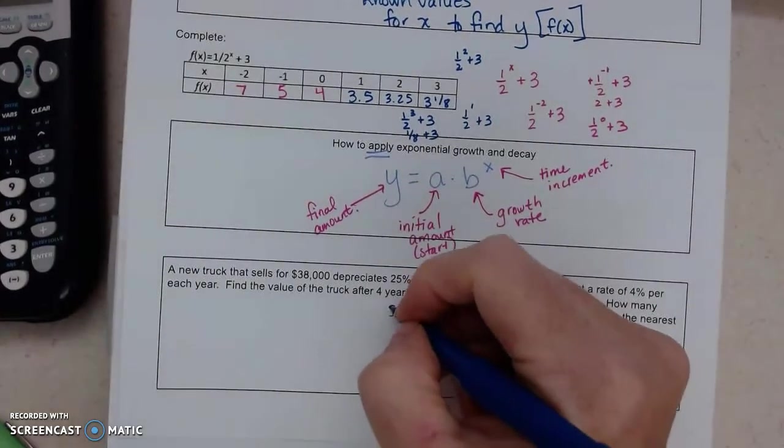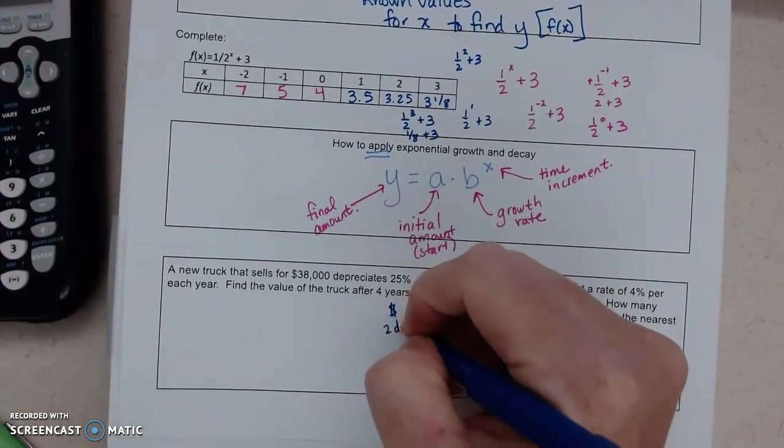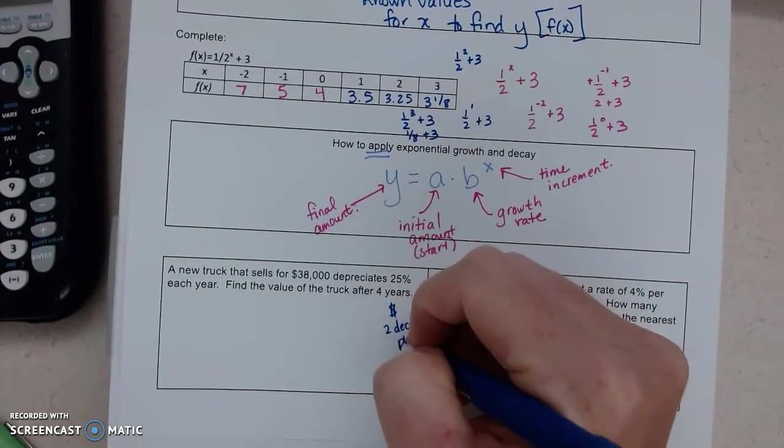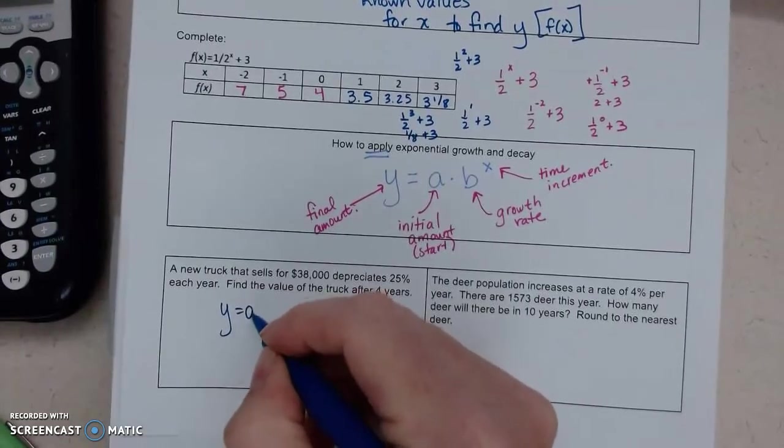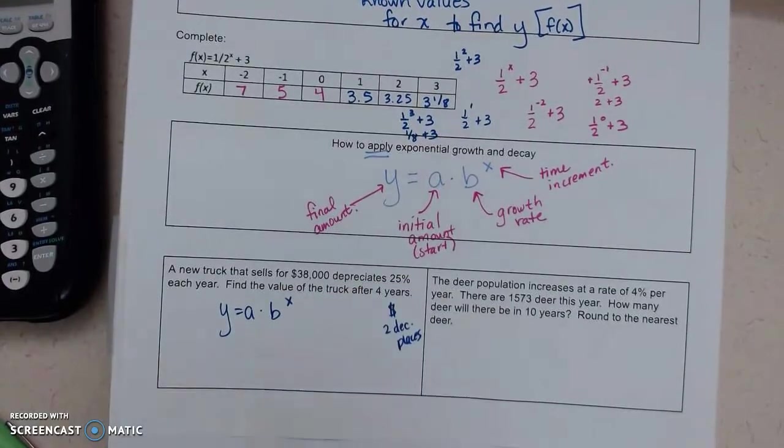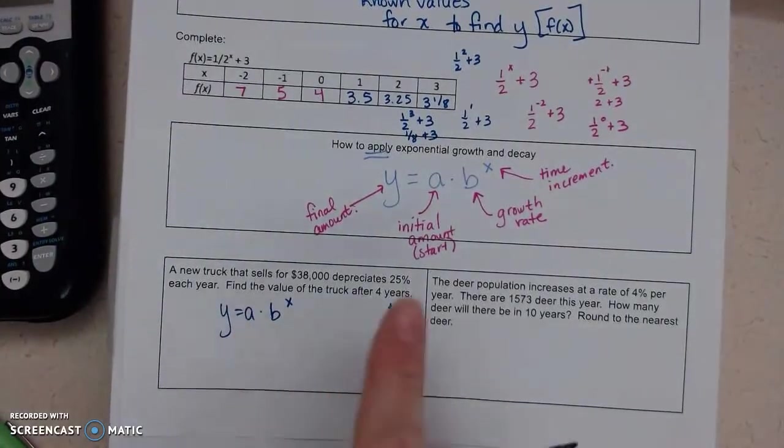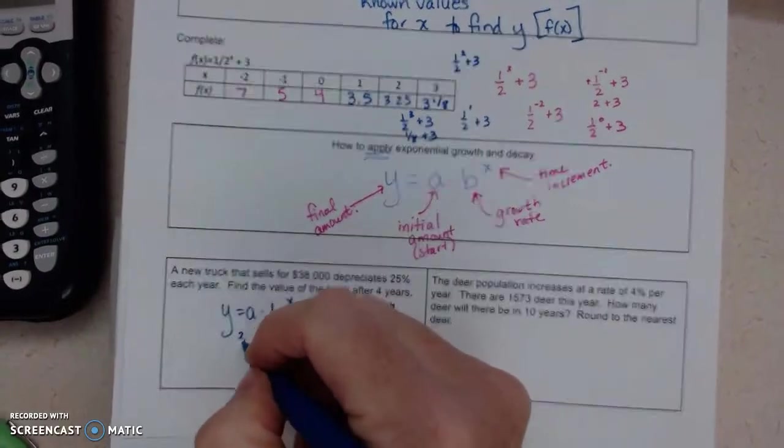First thing, since this is money, please use two decimal places. So I get y equals a times b to the x. I need to figure out what does it start out as? Well, that's $38,000.